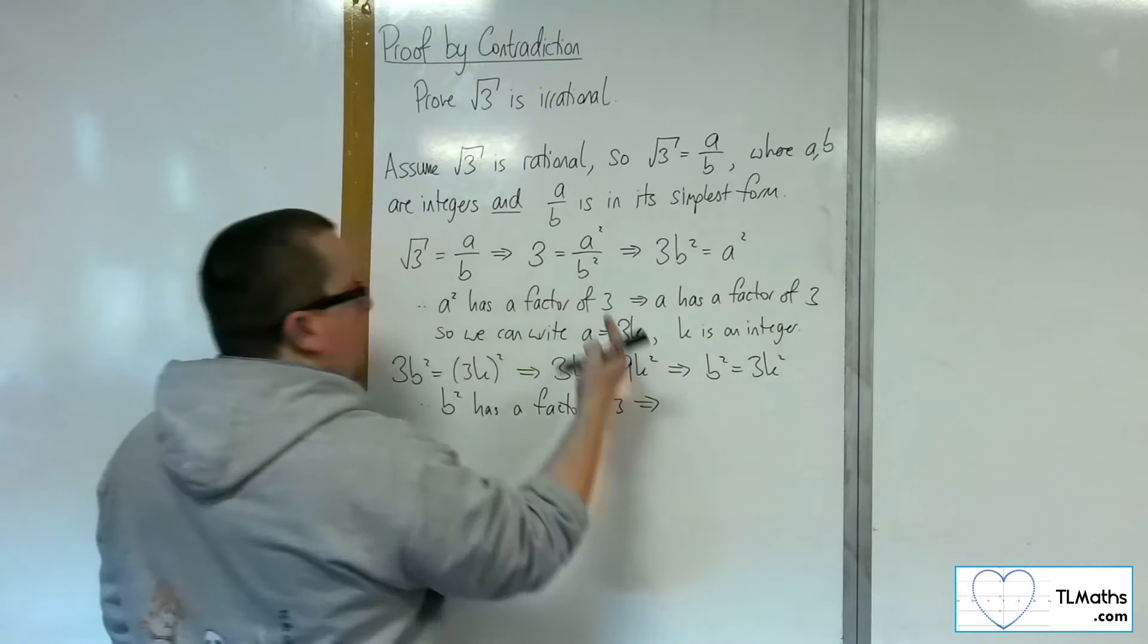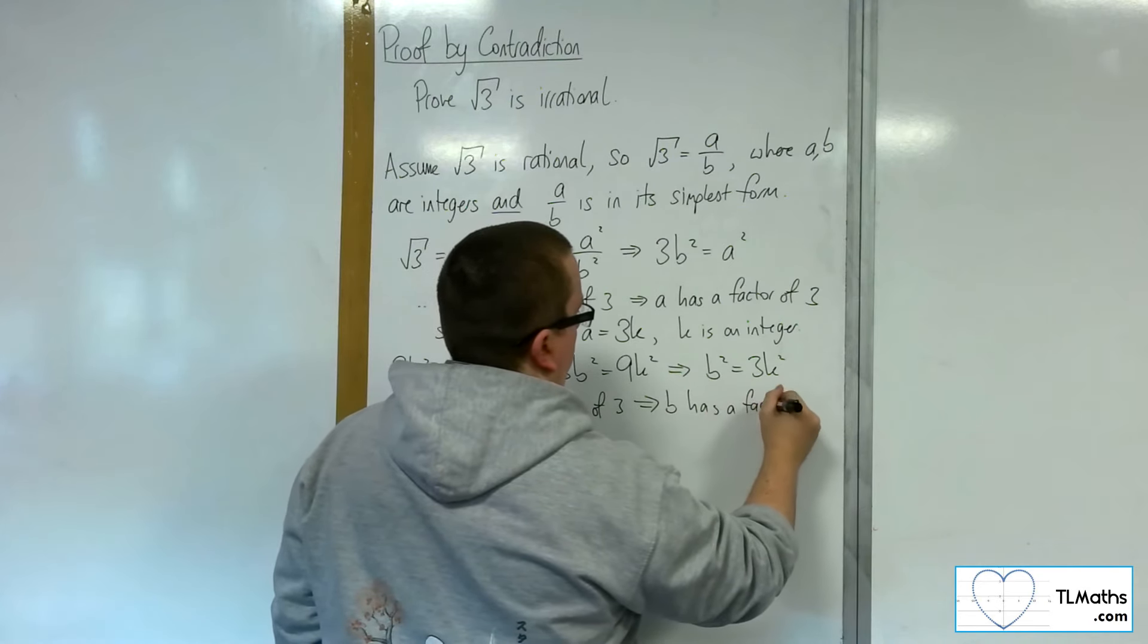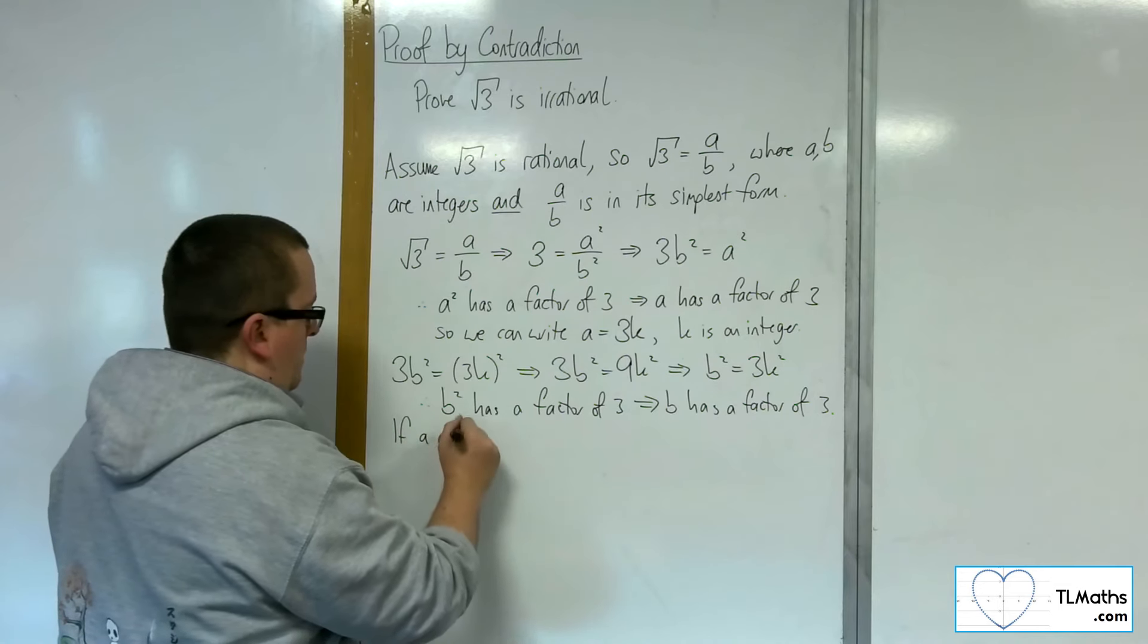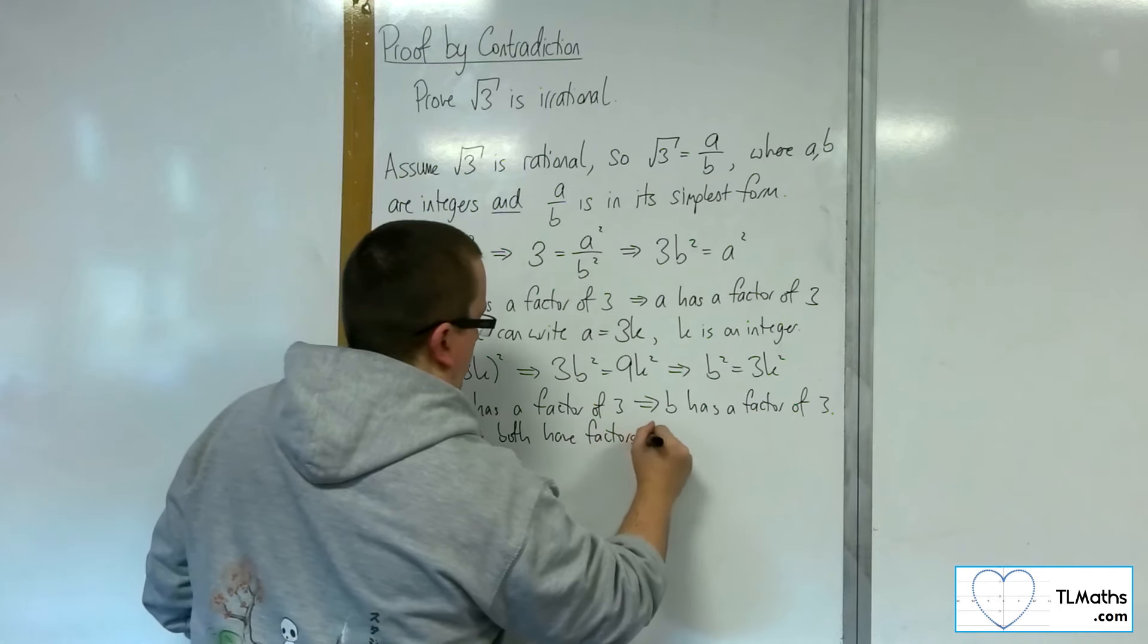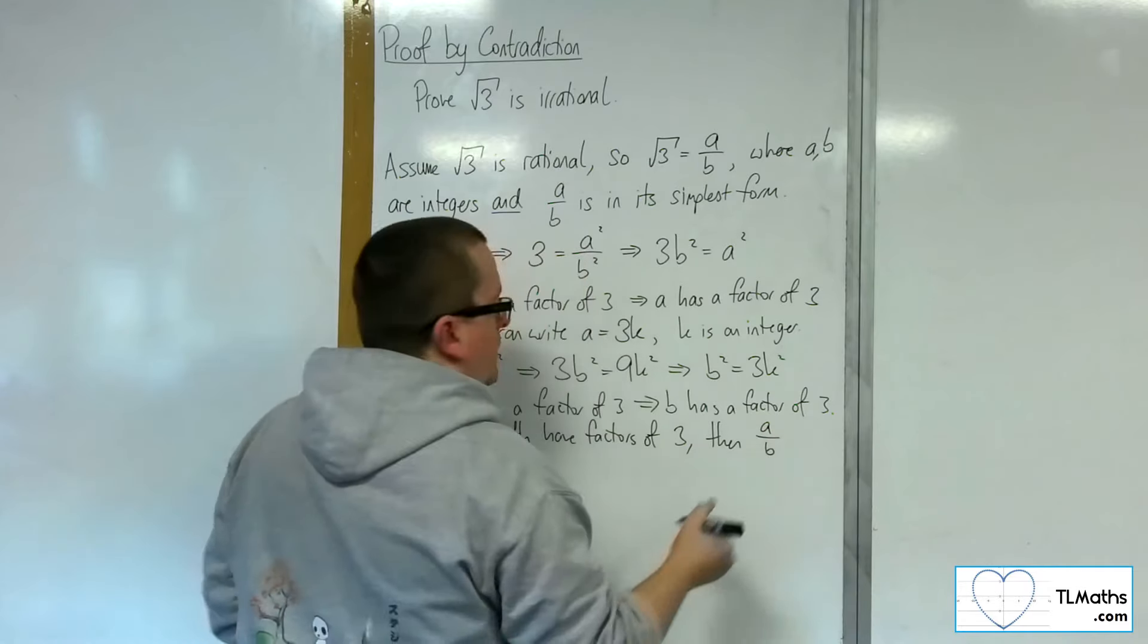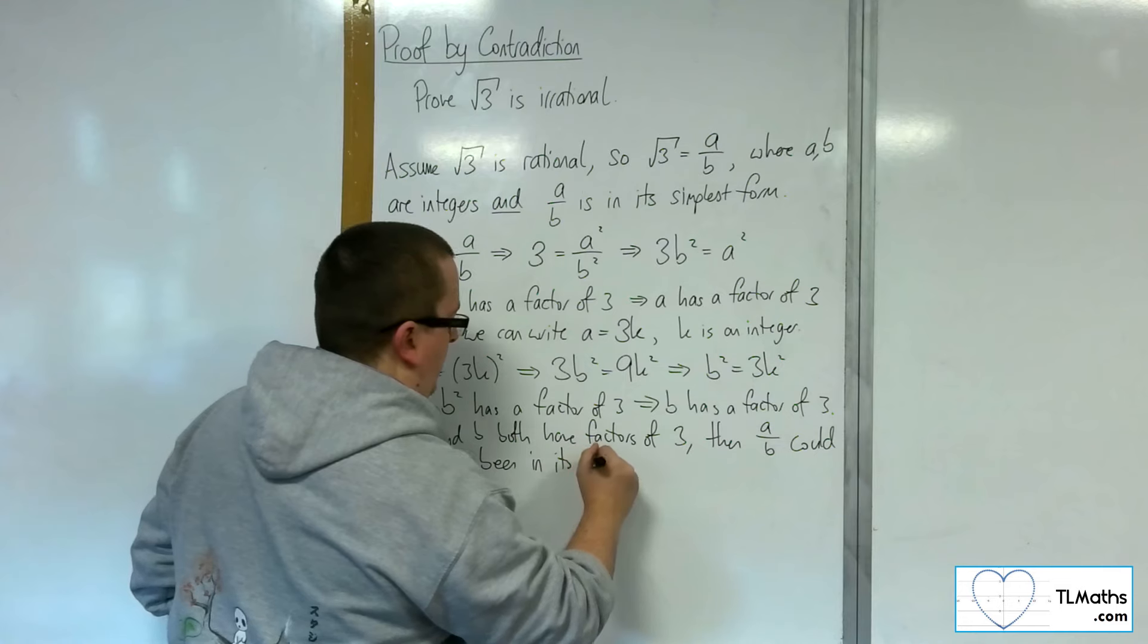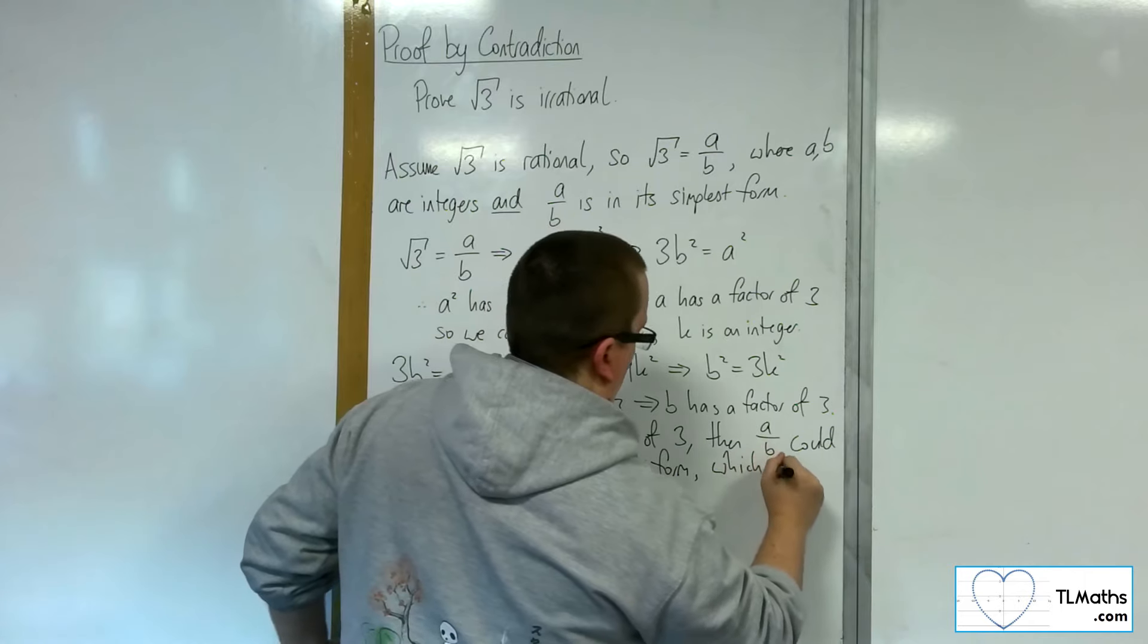And that employs, in exactly the same way as before, that b has a factor of 3. So that means if a and b both have factors of 3, then a over b could not have been in its simplest form. So, this is the crux of the proof, which is a contradiction.